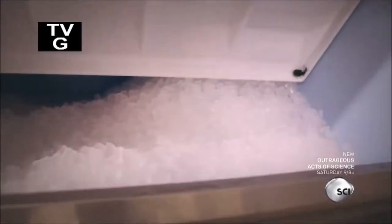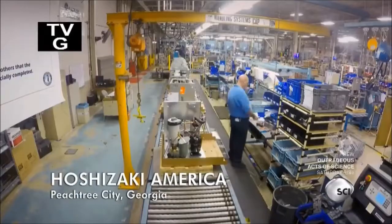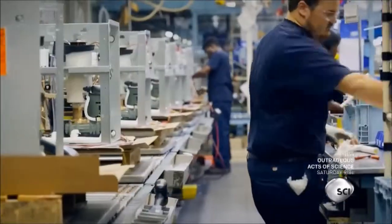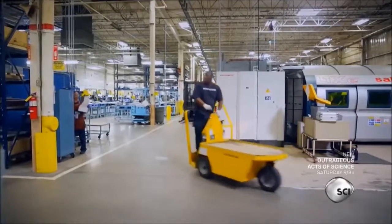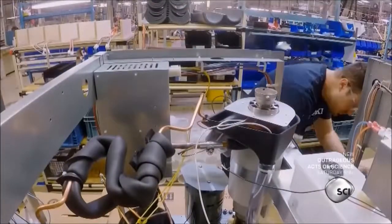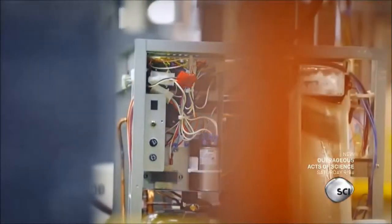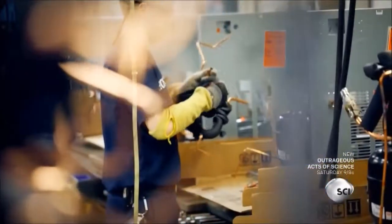Key to producing this much ice: a powerful freezer unit made by workers at this 200,000 square foot factory in Georgia. They make 141 different machines, all dedicated to turning water into ice.